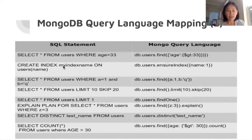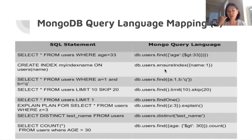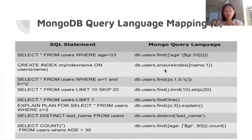Creating indexes is also very powerful in MongoDB. Basically you can take certain fields from a document, create index files from them, and then manipulate the data on the front end more easily. The key concept for developers is that MongoDB gives a lot of flexibility on the user end.